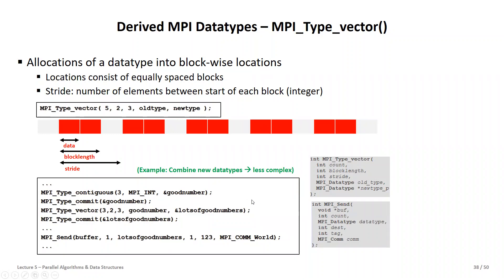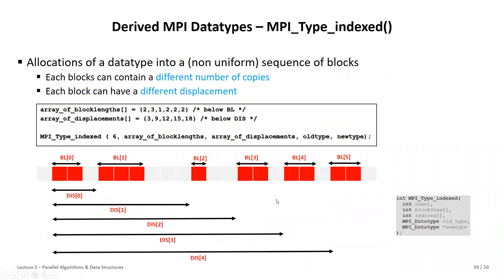There's also the indexed type, which is admittedly more complex. If you have an array and want to use only specific parts of it, the indexed type lets you specify which elements to include using block lengths and displacements — for example, six elements at displacement positions 3, 9, 12, and so on. This is better understood in practical Lecture 5.1 when we look at concrete examples.